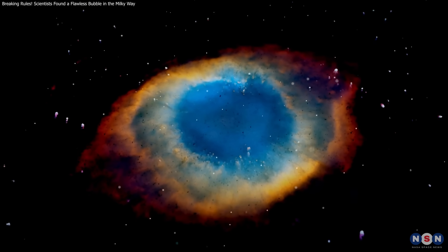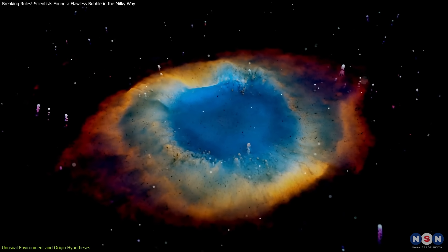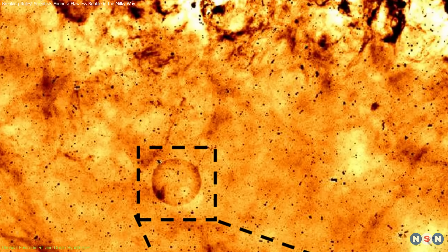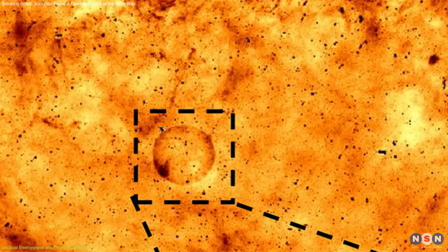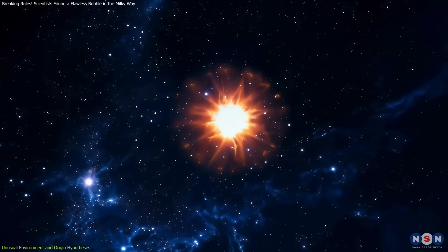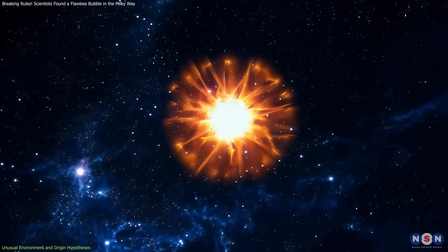Teleos may owe its perfect shape to its quiet neighborhood. It lies just below the crowded galactic plane, in a calm, low-density pocket of space. No chaos, no clutter, just the perfect place for symmetry to survive.